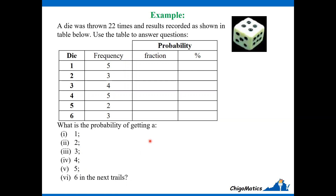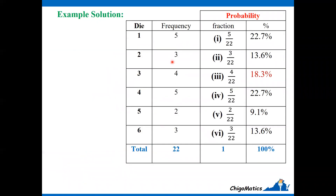The solution: the probability of getting a 1 — the success fraction is 5 out of 22 throws, so it is 5 over 22. The same reasoning applies for all other numbers. The success fractions represent the probabilities, so if you add all these success fractions you should get 1, and if you add all the frequencies you should get 22 because the die was thrown 22 times.